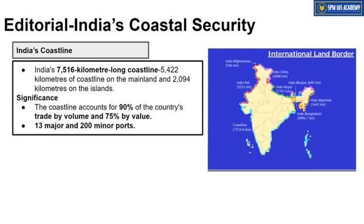In the entire country, we share land boundaries with Pakistan, Afghanistan, China, Nepal, Bhutan, Myanmar, and Bangladesh. But our long maritime boundary — our coastline — is about 7,516 km long, of which 5,422 km is our mainland coastline.